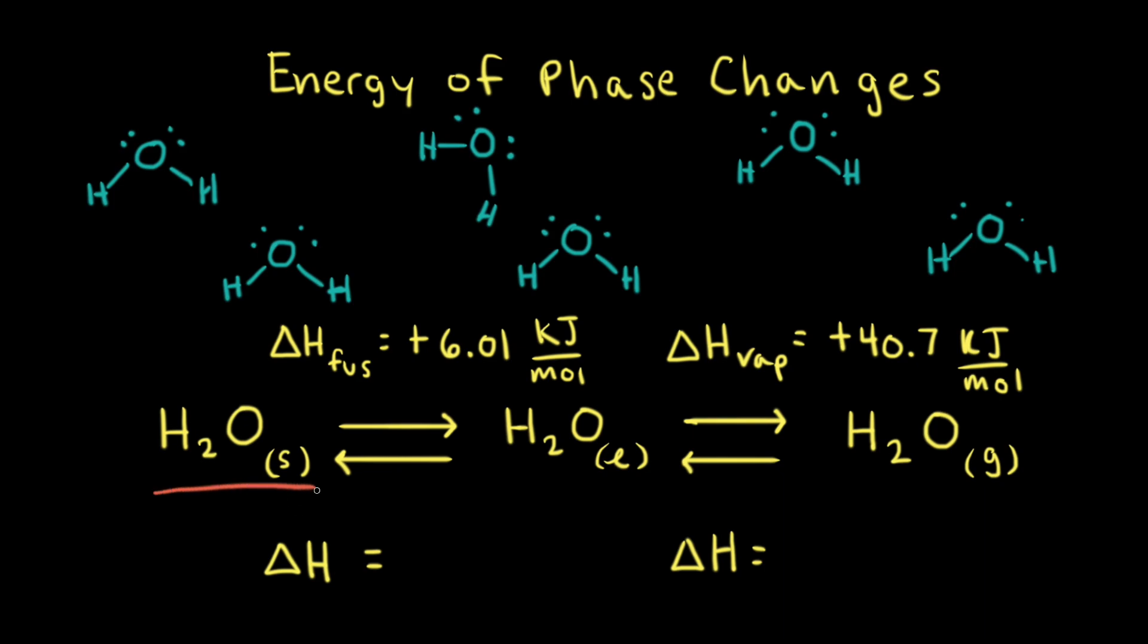Let's say that we have some solid water or ice and we want to melt the ice and turn the solid water into liquid water. This phase change of solid water to liquid water is called melting and it takes positive 6.01 kilojoules per one mole to melt ice.